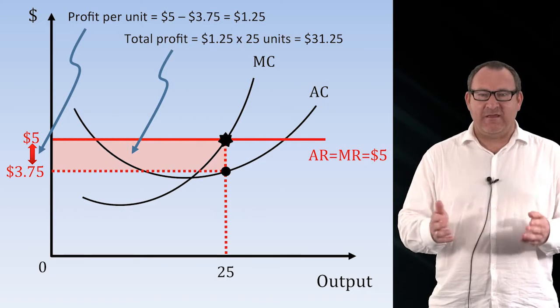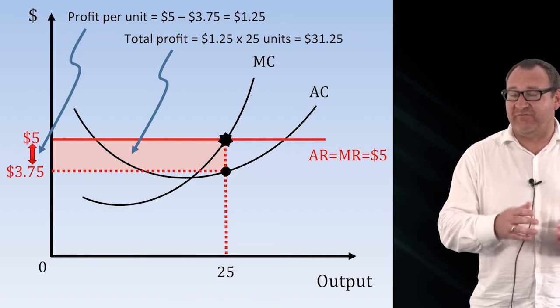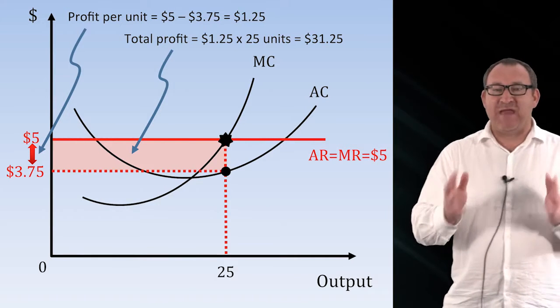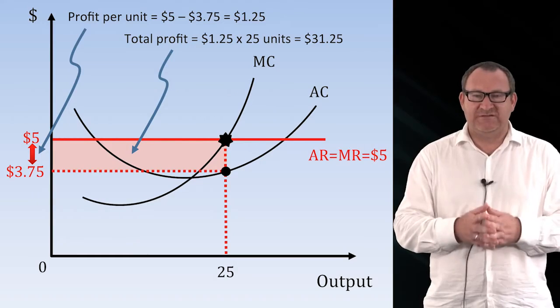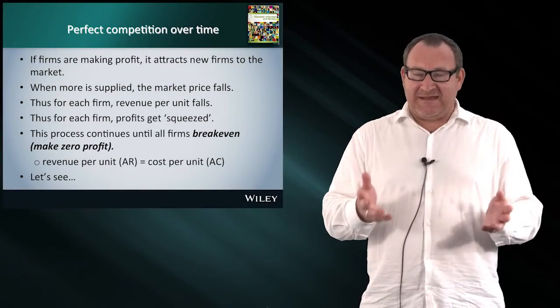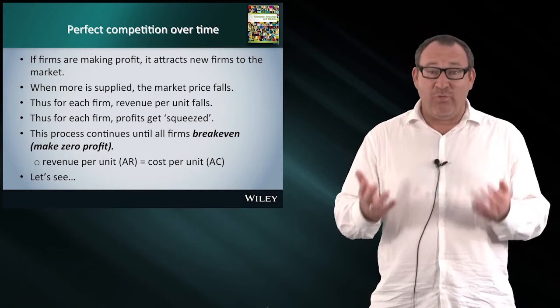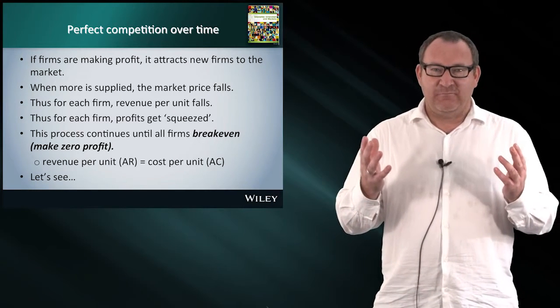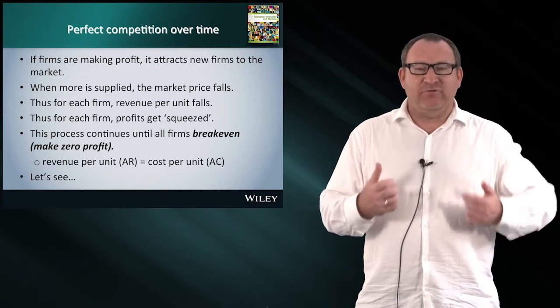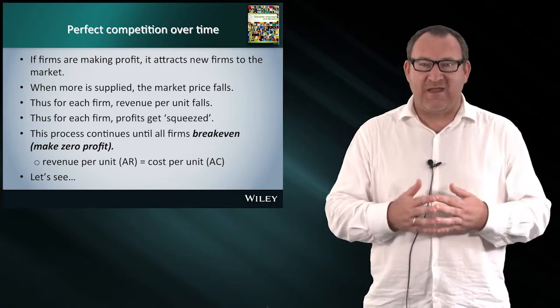At any other output level it would make less profit, so it is maximizing its profit at this point and will choose this output. So would it be the case that this firm and all the other firms like this in the marketplace continue to make profits forever? Well the answer is no. If the firms in our tomato market are all making profits, then that will tend to attract new firms to the marketplace.